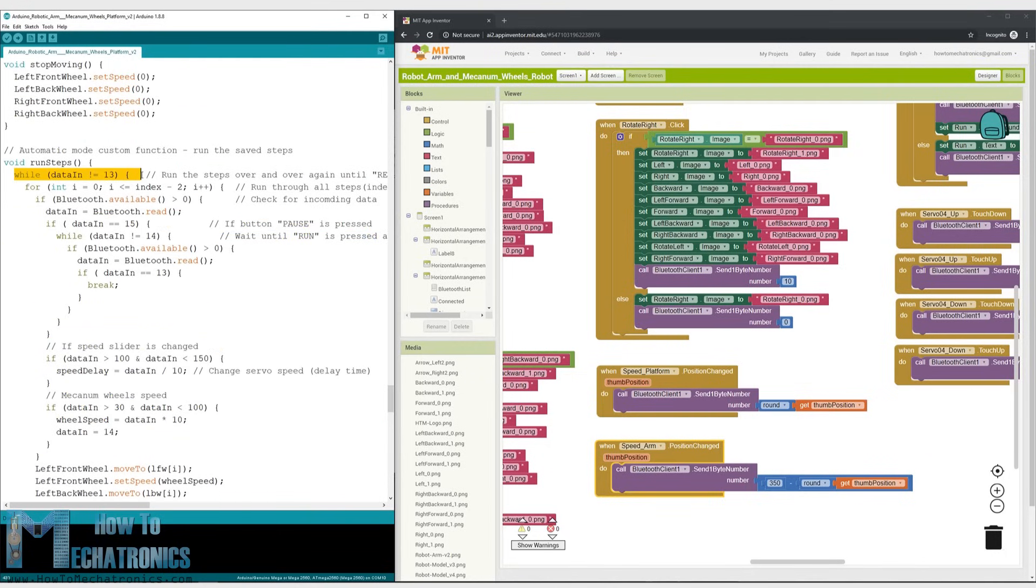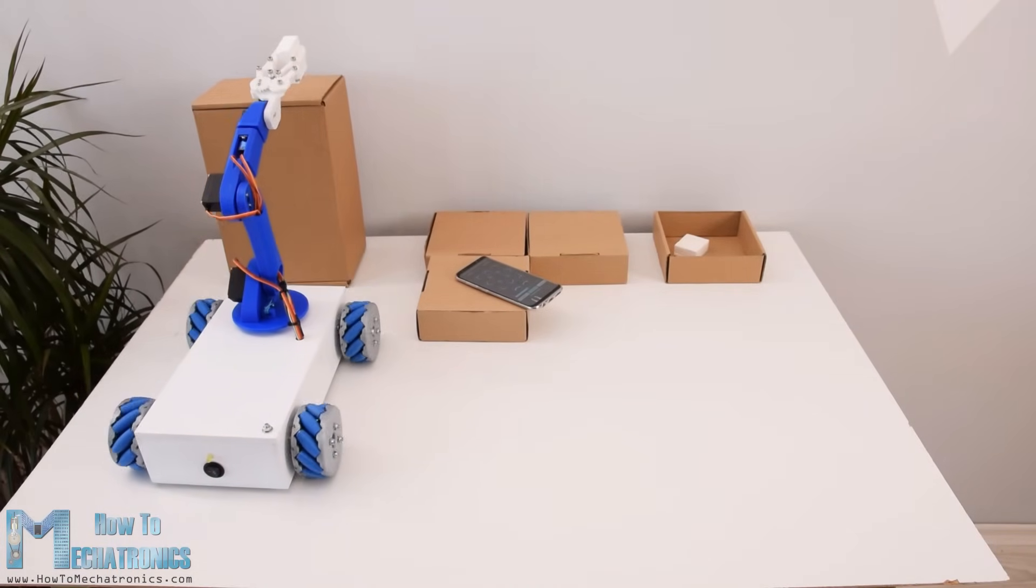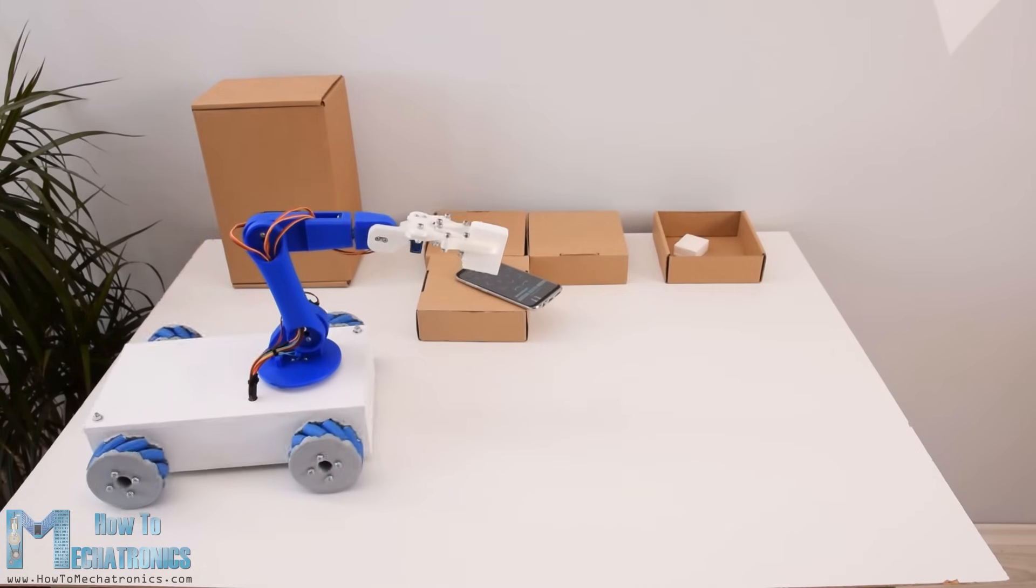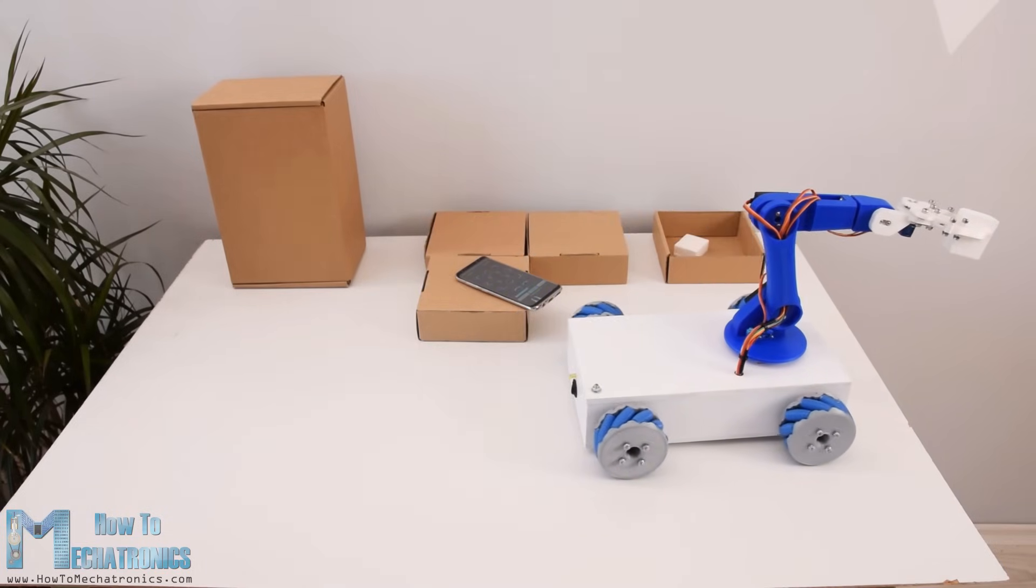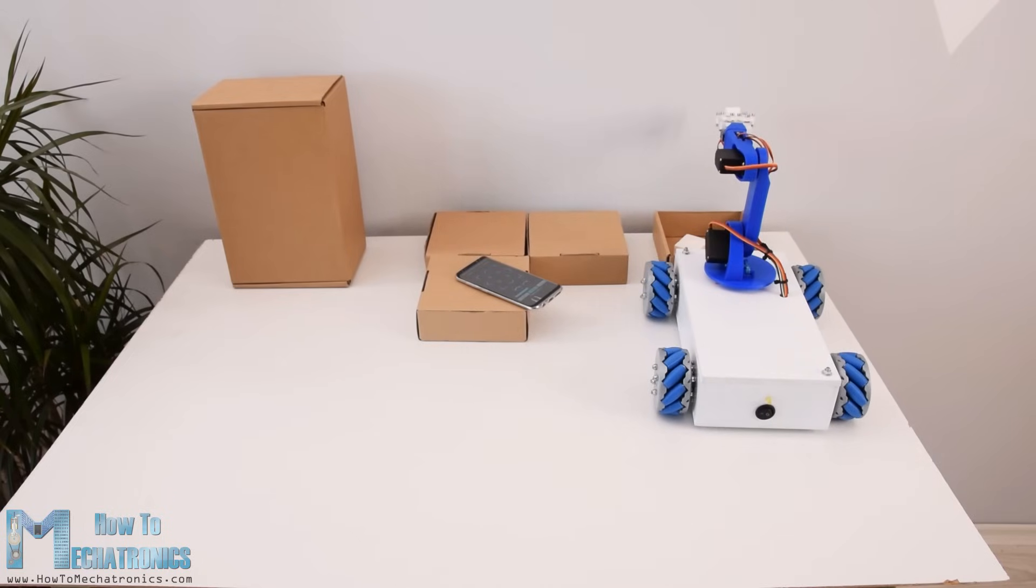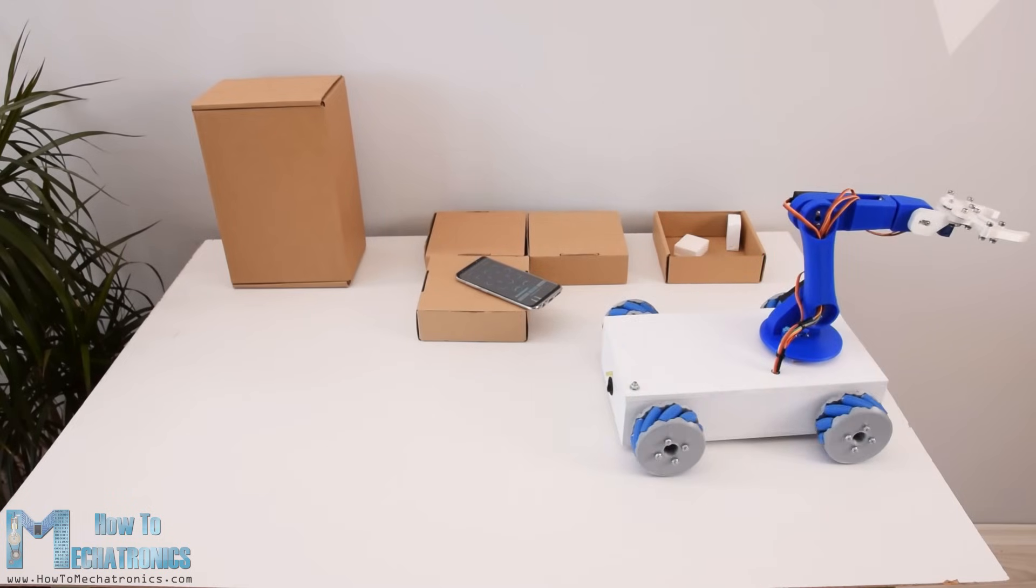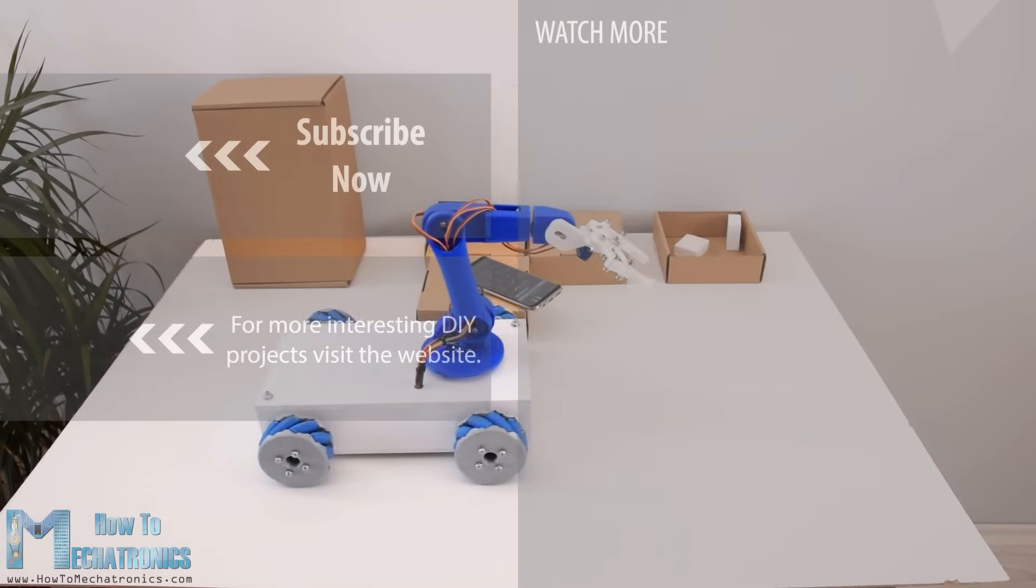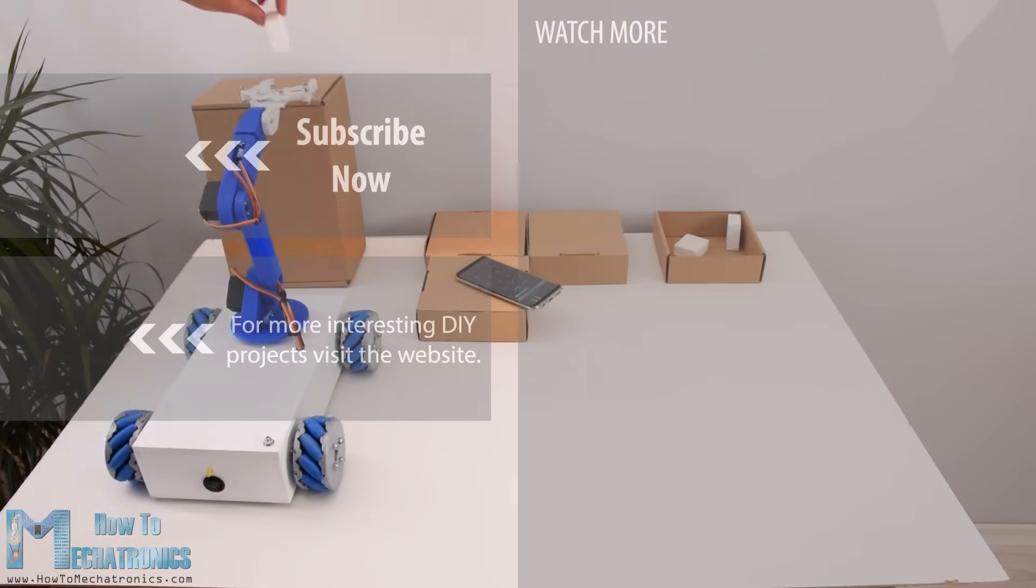The project works well but please note that it's far from perfect. The automatic movements might not be that precise because of the slipping of the mecanum wheels as well as the poor performance of the servo motors. These cheap servos can shake or jitter even when not moving just because they don't have enough strength to hold the weight of the 3D printed parts. I hope you enjoyed this video and learned something new. Don't forget to subscribe and for more tutorials and projects visit howtomechatronics.com